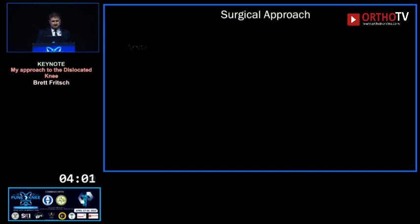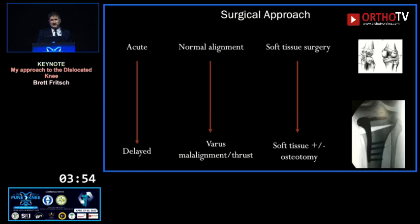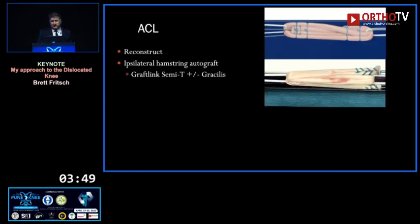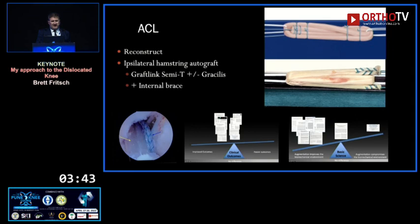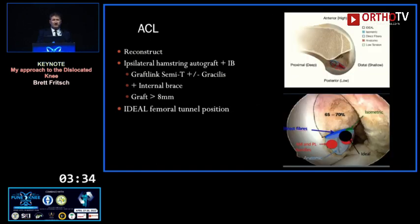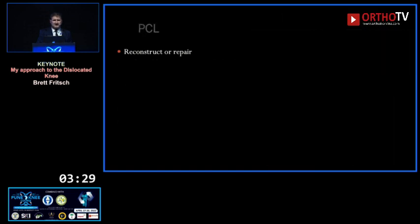In the acute case with normal alignment it's soft tissue surgery. In the delayed case with varus malalignment or thrust, consider combination with an osteotomy. For the ACL I reconstruct, tending to use ipsilateral hamstrings — I think a patellar tendon harvest is a little much for a traumatized knee. I add an internal brace because the weight of evidence trends toward benefit. I like a bigger graft, again trending toward benefit, placed in the ideal tunnel position with bone grafting of that tunnel.